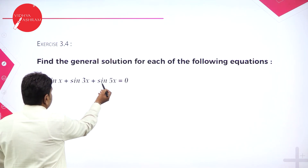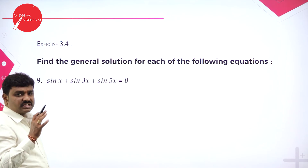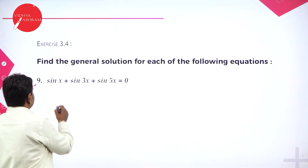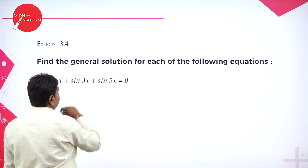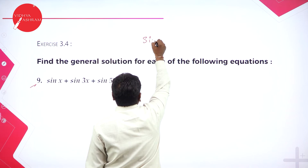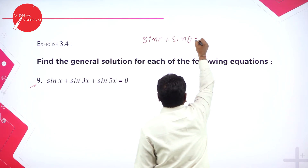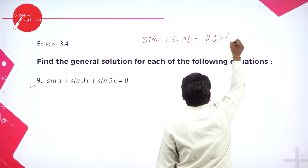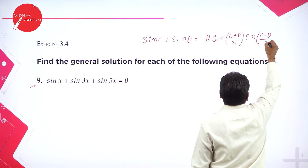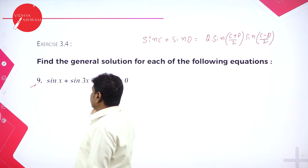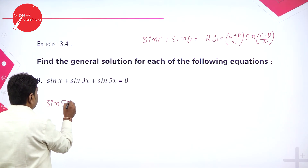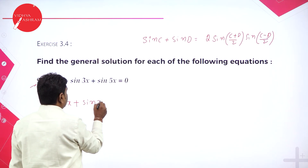Next: sin x plus sin 3x plus sin 5x equals 0. Group and use the sin c plus sin d transformation repeatedly. We have 1, 3, 5. Rearranging: sin 5x plus sin 3x plus sin x. I will club the first and second terms and apply the formula.